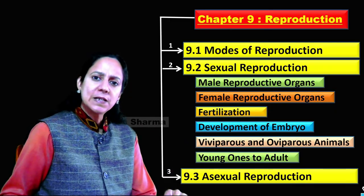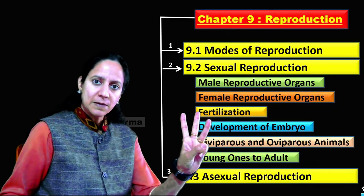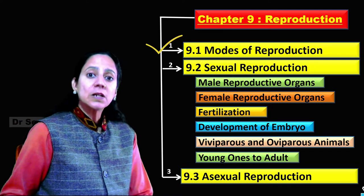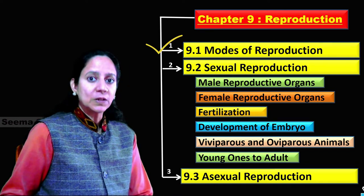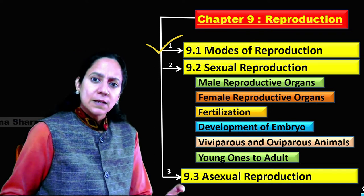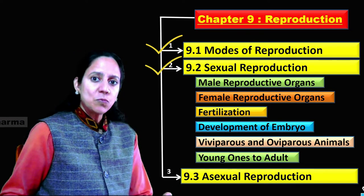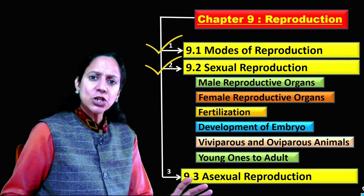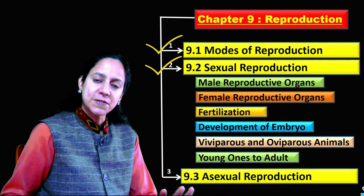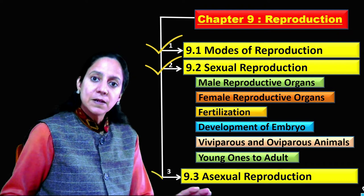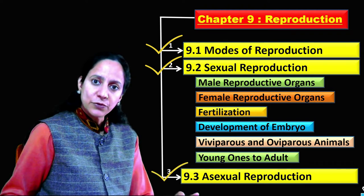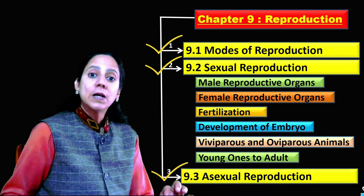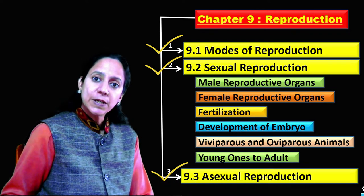This chapter is basically divisible into three parts. The first part is about reproduction, its meaning, importance and subtypes. The second segment, 9.2, is devoted to understanding sexual reproduction and its various types. The third segment, 9.3, covers asexual reproduction in animals.